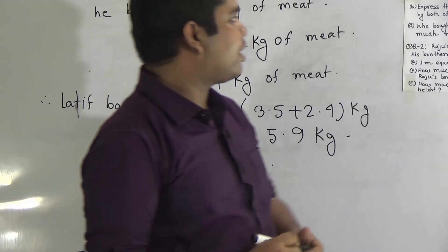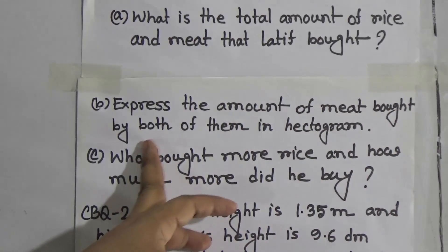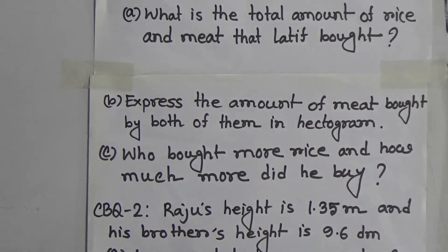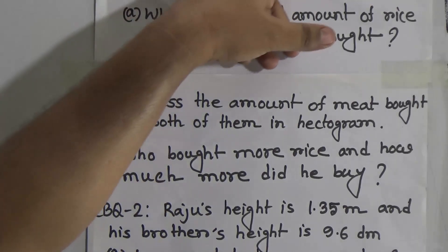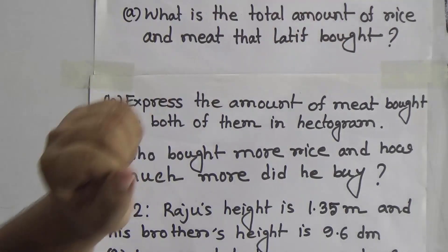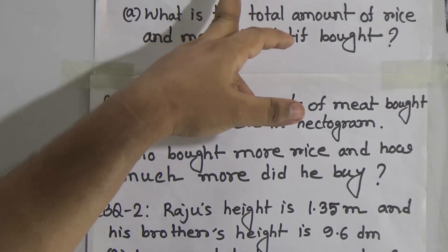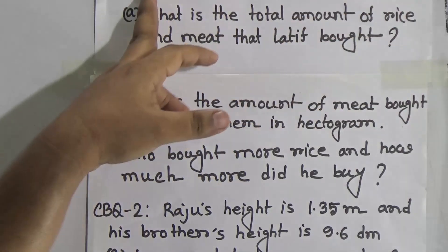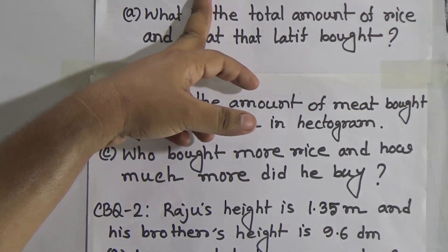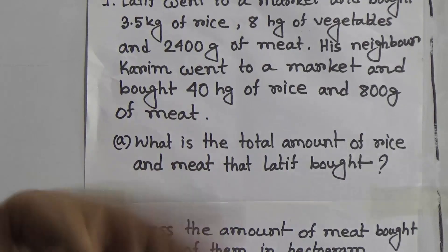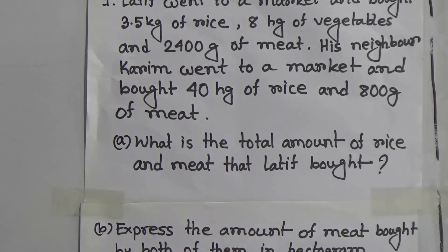Part B: Express the amount of meat bought by both of them in hectogram. Please notice: Lotif bought 2400 gram of meat and his neighbor Korim bought 800 gram of meat. First we add their total amount of meat, then we convert that gram into hectogram, because the question asks for the answer in hectogram.